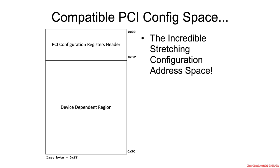We've finally covered port IO access to configuration address space. So now let's move on to memory-mapped IO and specifically the PCIe extended configuration address space.